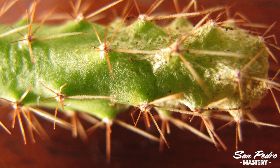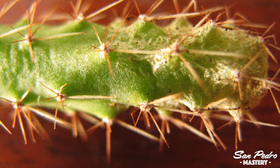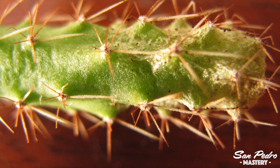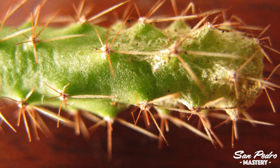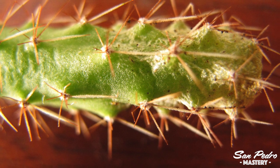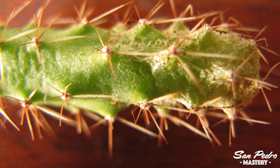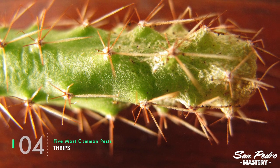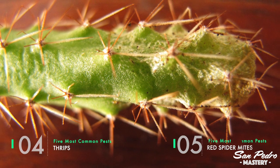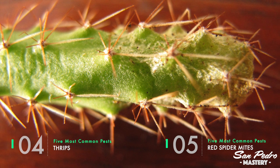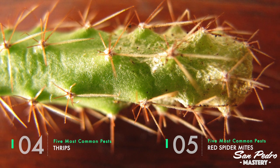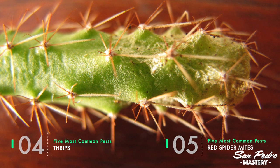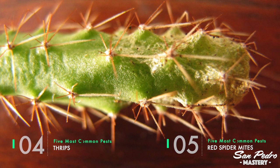So far, the first 3 types of bugs we've seen in this video are super easy to identify. The other 2 are much harder to identify, mostly because both species can create similar-looking bite marks. These insects are thrips and red spider mites. Typically, thrips will attack more the trichocereus cacti like San Pedro, whereas red spider mites will prefer the peyote.